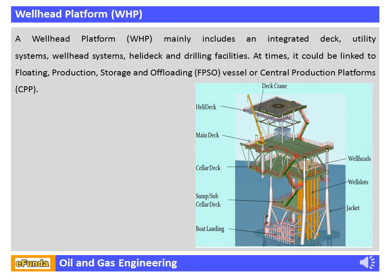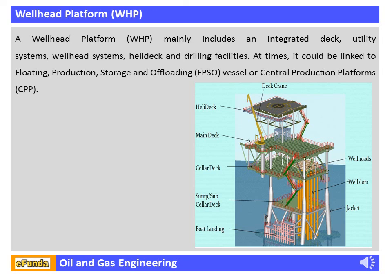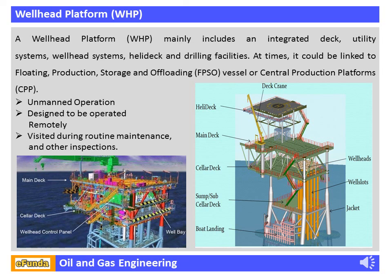The Wellhead Platform (WHP) mainly includes an integrated deck, utility systems, wellhead systems, heli-deck, and drilling facilities. At times it could be linked to a Floating Production, Storage, and Offloading (FPSO) vessel or Central Production Platform (CPP). Wellhead platforms are normally unmanned platforms, designed to be operated remotely from the process complex and only visited during routine maintenance and inspection requirements.